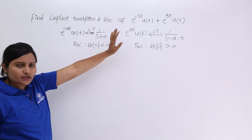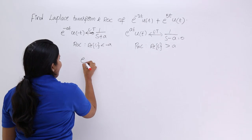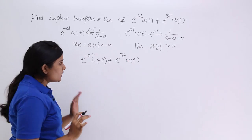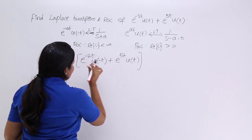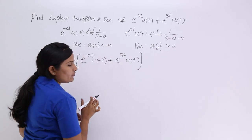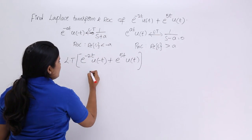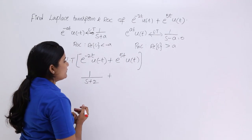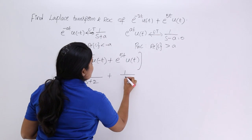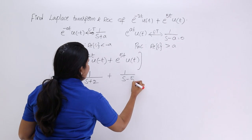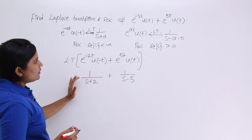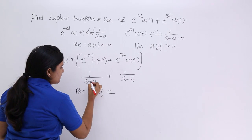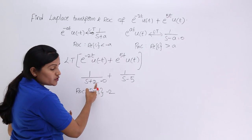Now I want to apply these two shortcuts to the combination signal. Our given signal is e^(-2t)u(-t) + e^(5t)u(t). To find the Laplace transform, I find each part individually. Applying the first formula gives 1/(s+2), and for e^(5t)u(t) I write 1/(s-5). So the total Laplace transform is 1/(s+2) + 1/(s-5). When writing the ROC, we need to find the real part from each term.